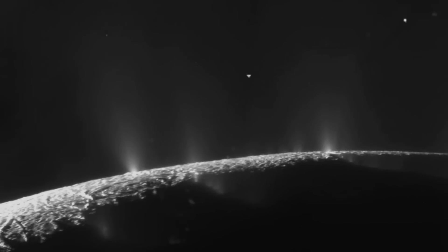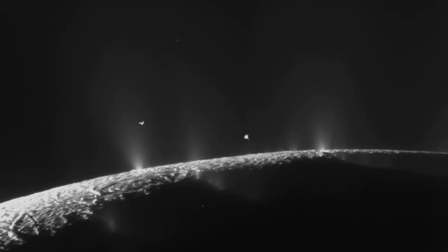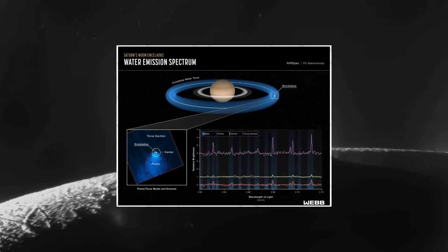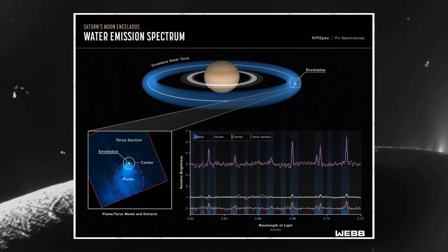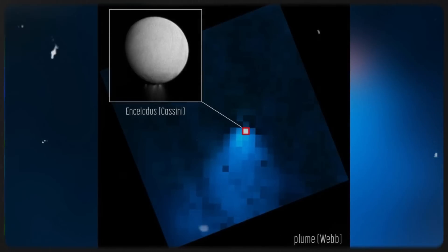The telescope also observed an enormous water vapor plume erupting from Enceladus, one of Saturn's moons. Stretching nearly 10,000 kilometers, this plume likely contributes to Saturn's rings. Additionally, it provided a detailed look at a mini-Neptune exoplanet about 40 light-years away, revealing a cloudy, steam-filled atmosphere.